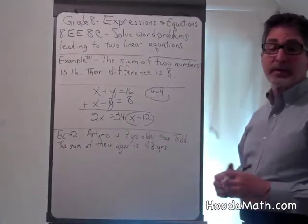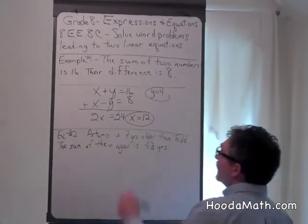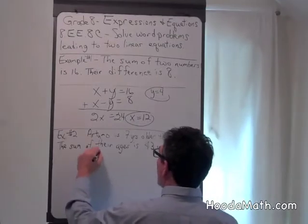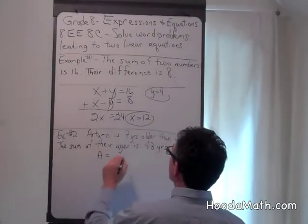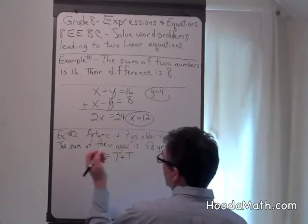Example 2 we're going to solve in a slightly different way. Arturo is 7 years older than Todd. So a equals 7 plus t or t plus 7.